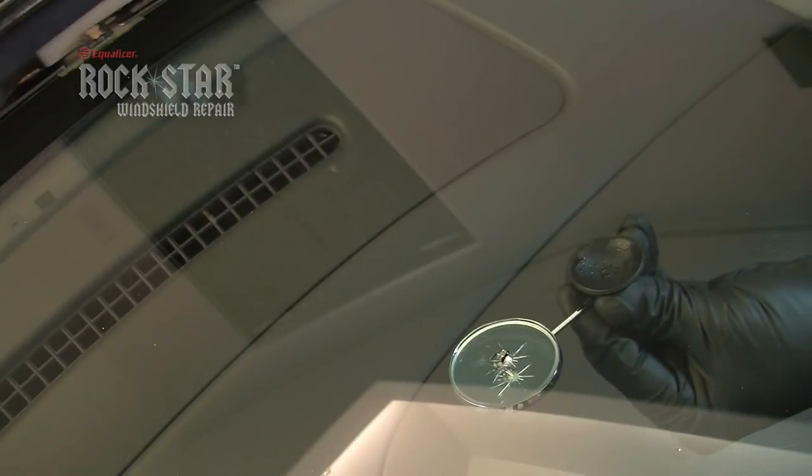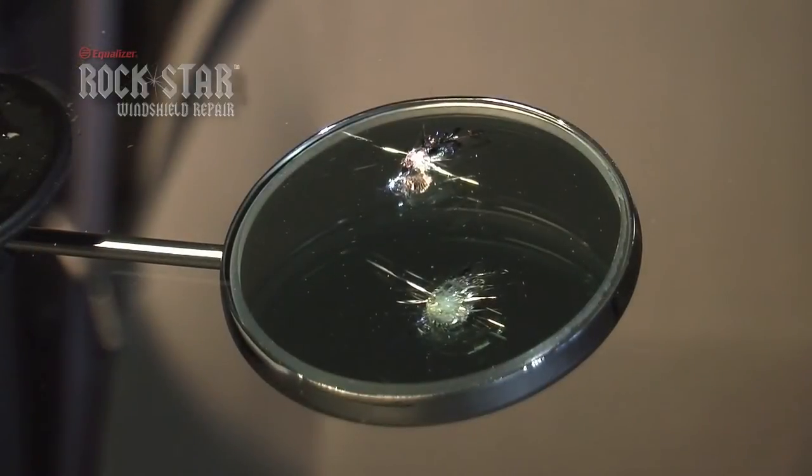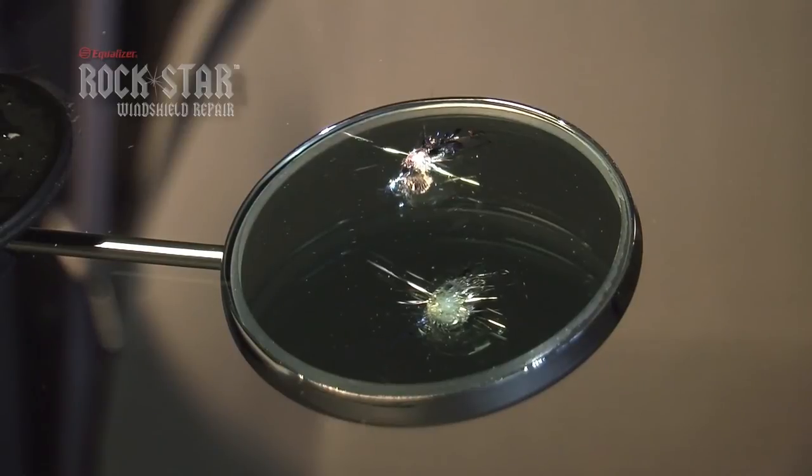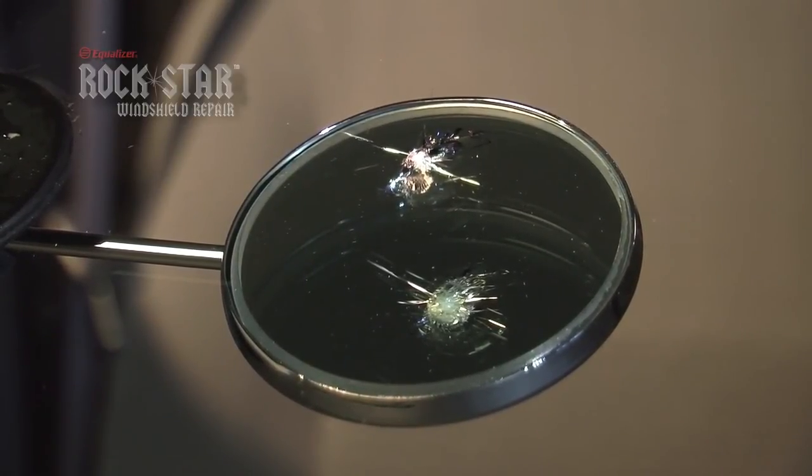Place the mirror on the inside of the windshield under the damaged area. Examine the damaged area from the inside and outside of the vehicle. Look for hidden cracks, moisture, contamination, or previous repair attempts. Determine if the damage is within the scope of your technical experience to repair.